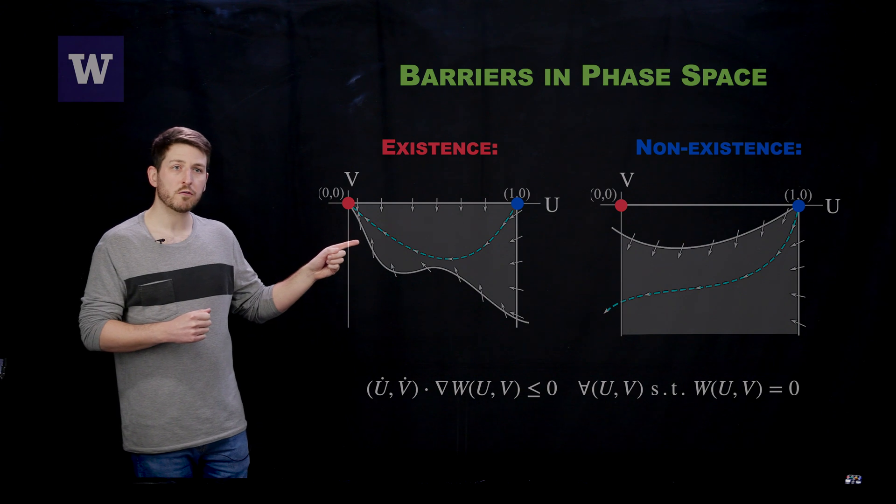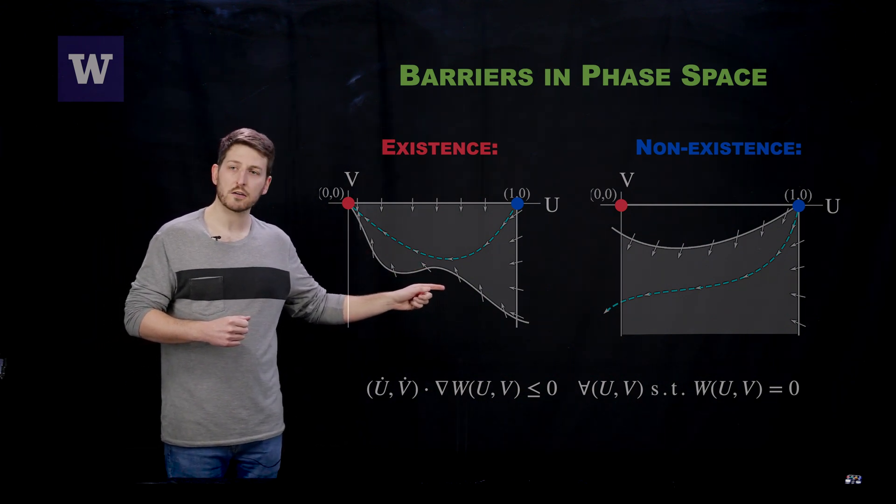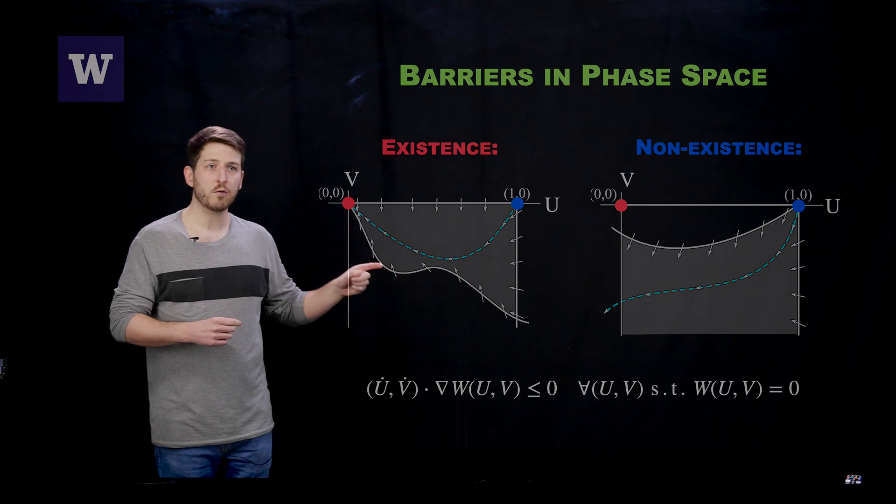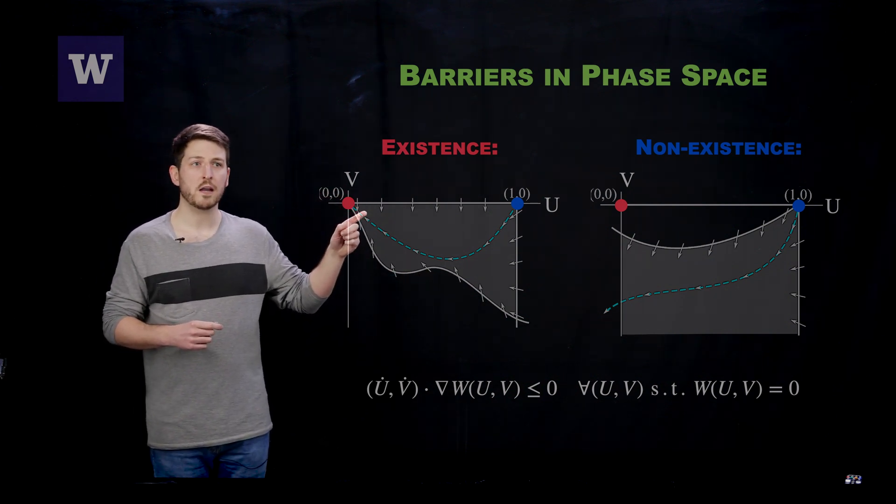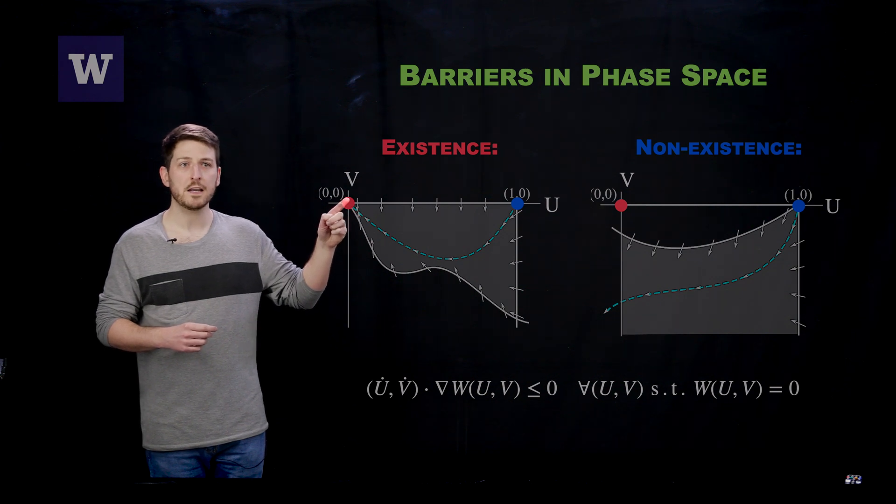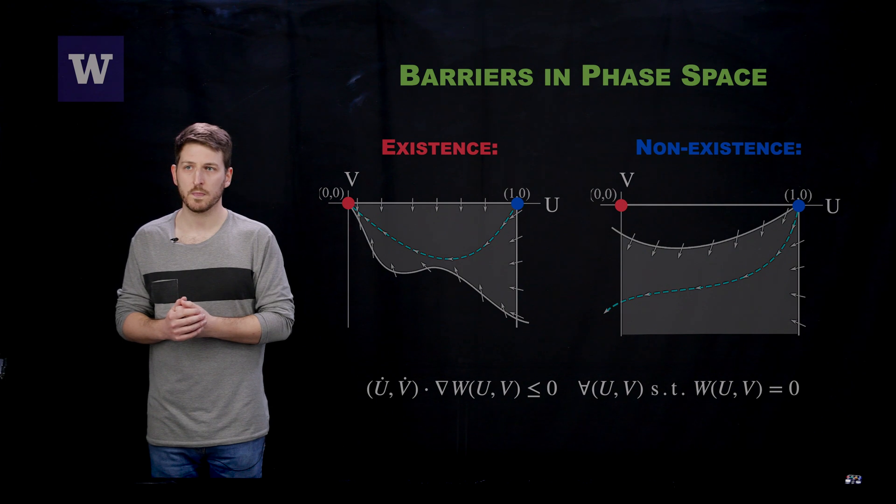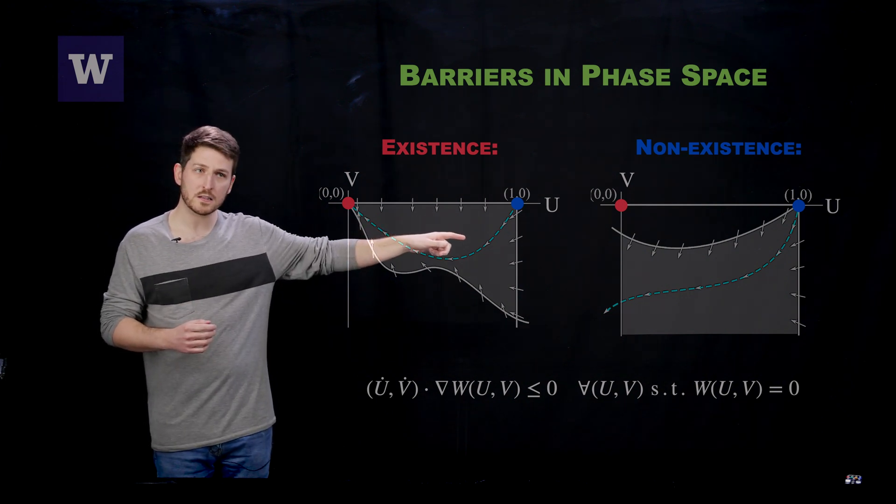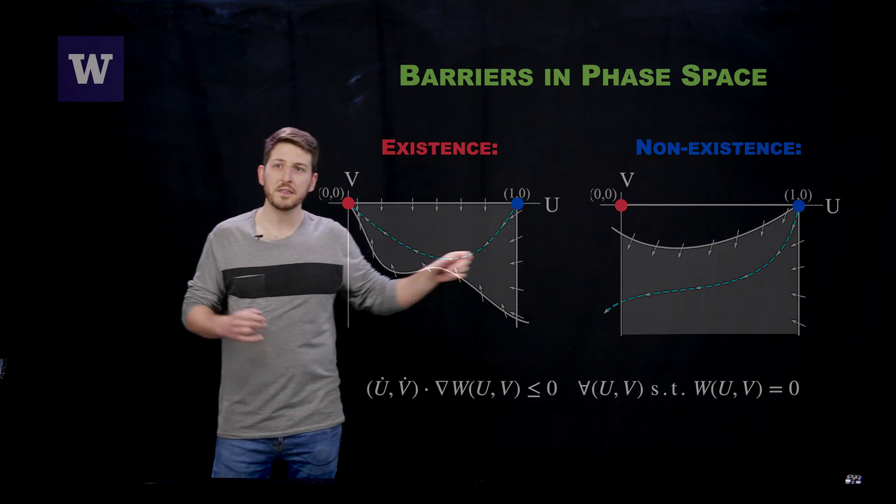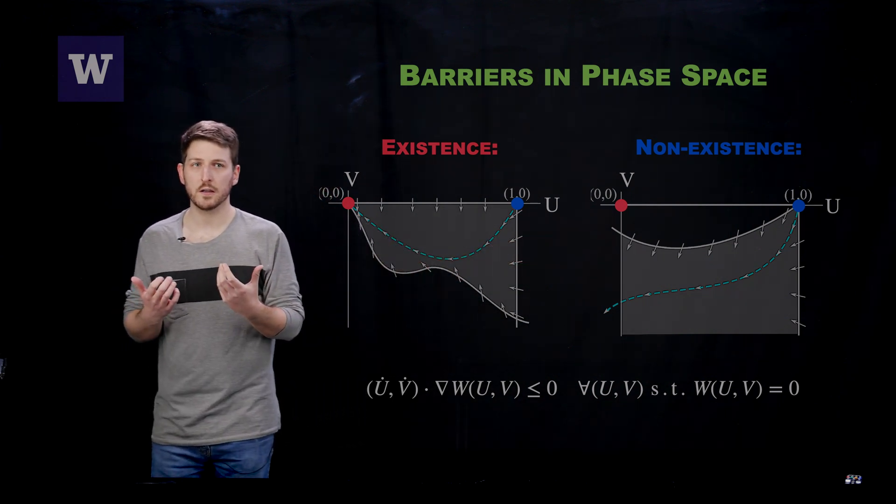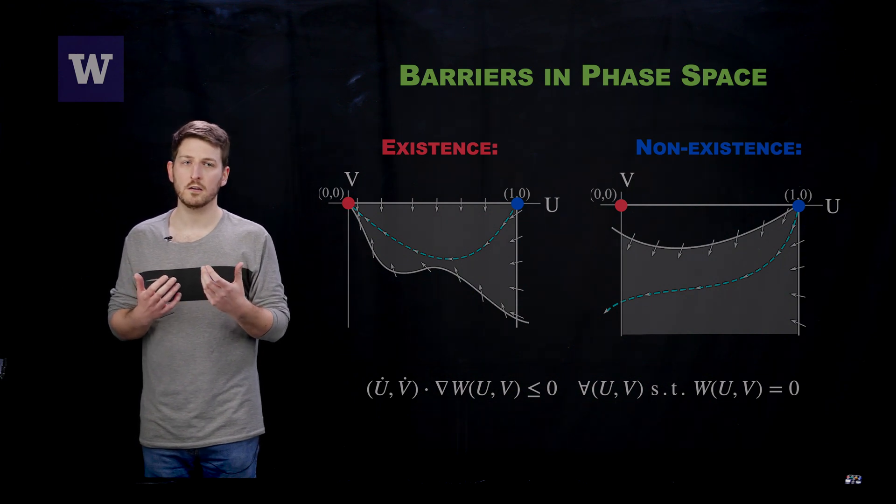For example, you can confirm existence by finding a curve for which your trajectories cannot cross. Therefore, you can see that it's going to guide your unstable manifold of your blue state right into the red state, guaranteeing a traveling wave solution. You can do something similar to confirm non-existence, as you can see from the far image here. But the issue with doing this traditionally is that the equations that need to be satisfied are quite technical and very difficult.